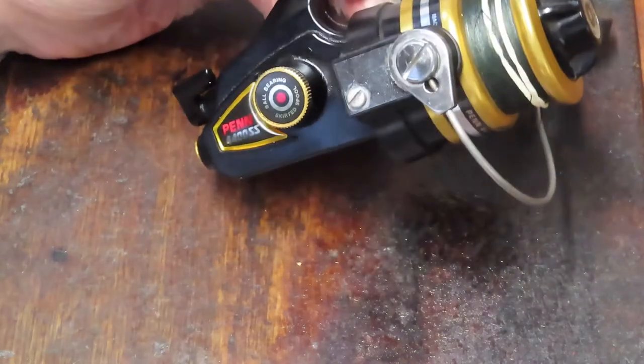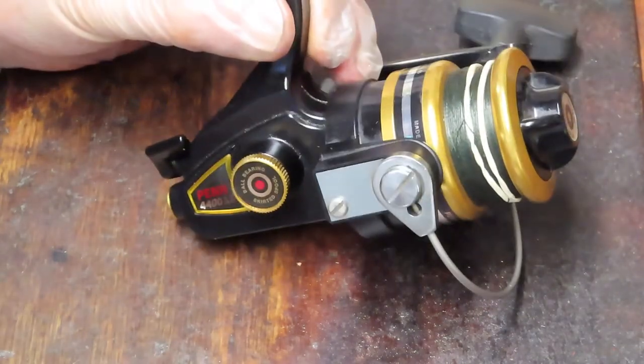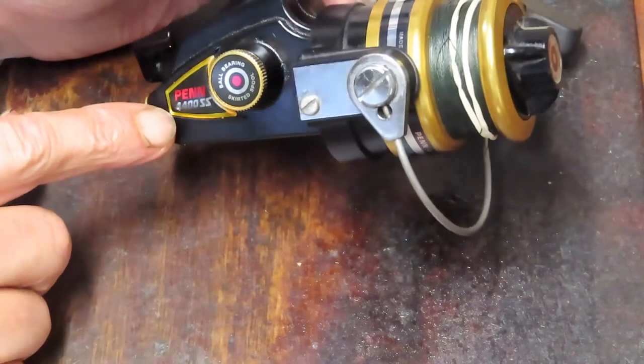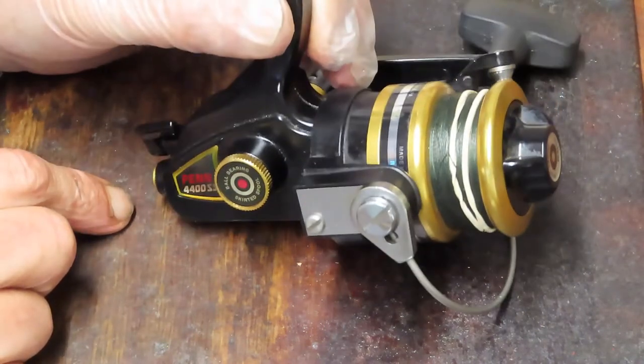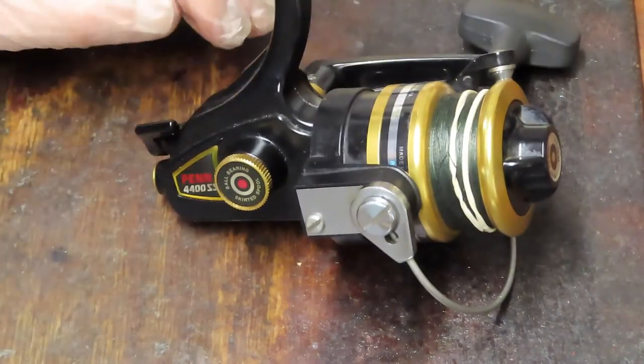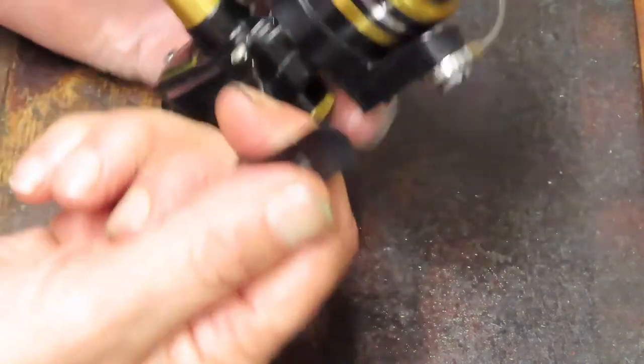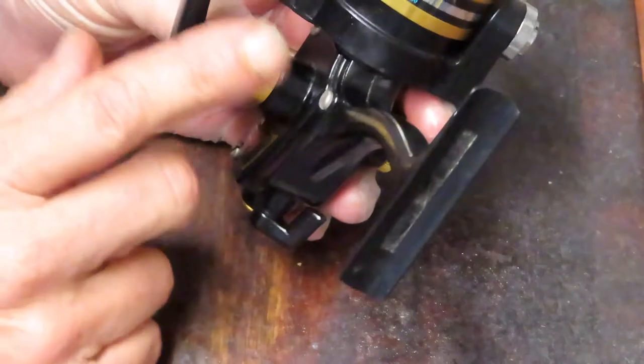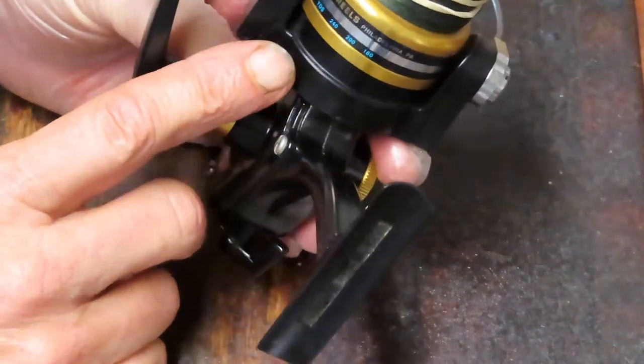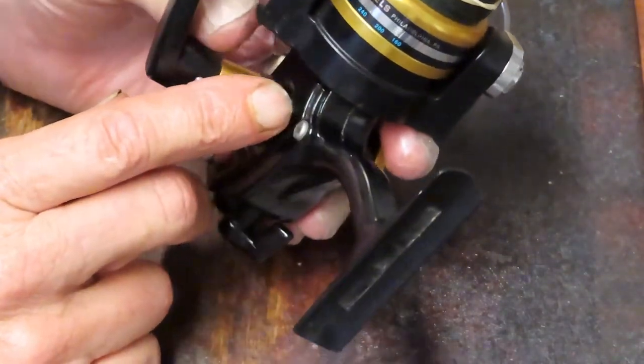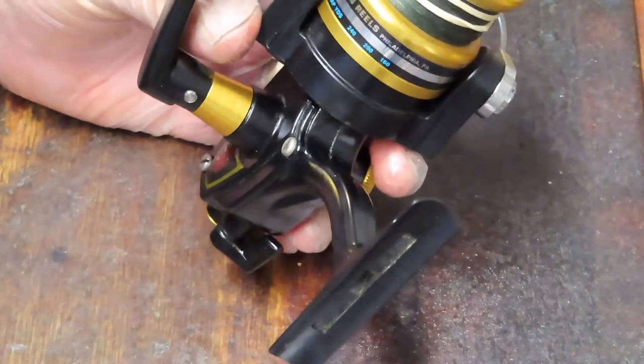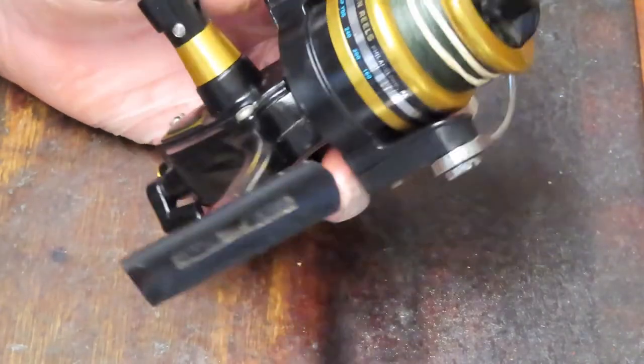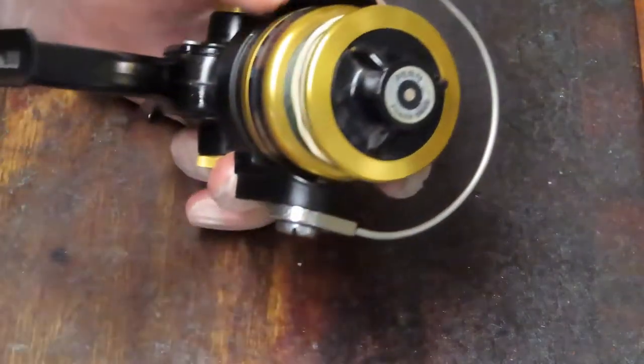So we're going to work today on how to replace the anti-reverse dog in a 4400 SpinFisher. This is the 4400 SS. Now I've already rebuilt this reel and I've left some of the pieces just kind of hanging because Tom sent me the reel and Tom said the anti-reverse isn't working. And sure enough, when I open the reel up, the dog is worn.